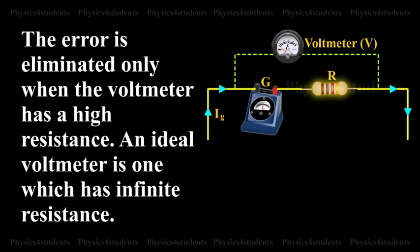The error is eliminated only when the voltmeter has a high resistance. An ideal voltmeter is one which has infinite resistance.